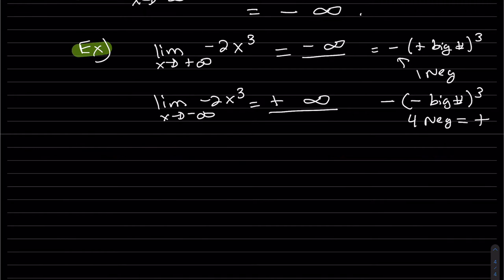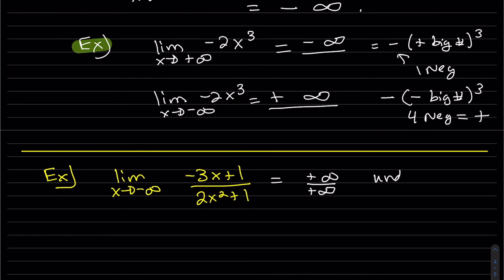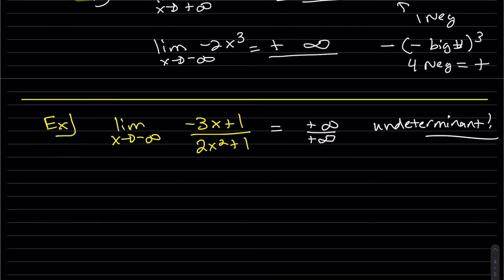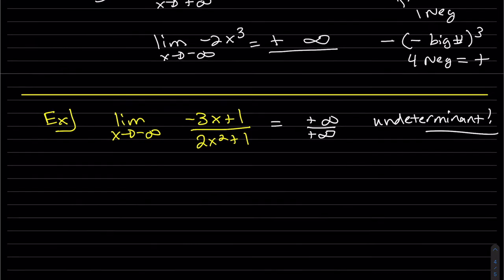For a rational function example, if you just plug in infinity you get positive infinity over positive infinity, which is the same indeterminate form as zero over zero. That doesn't mean it's infinity, it doesn't mean the terms cancel to give one — we just don't know yet. This is the same technique used to find horizontal asymptotes when graphing rational functions.